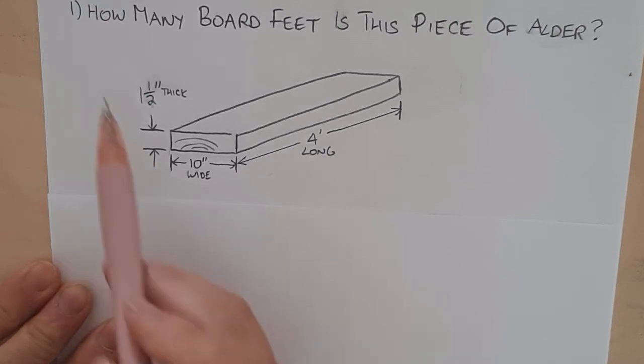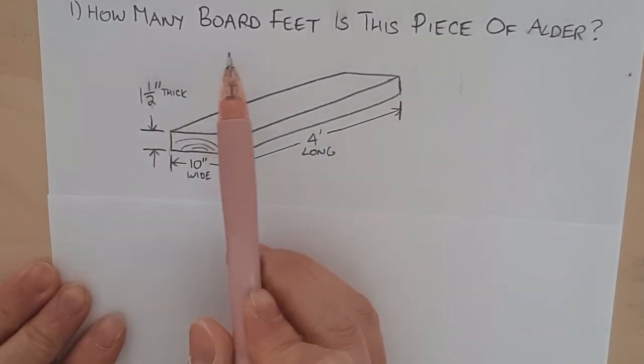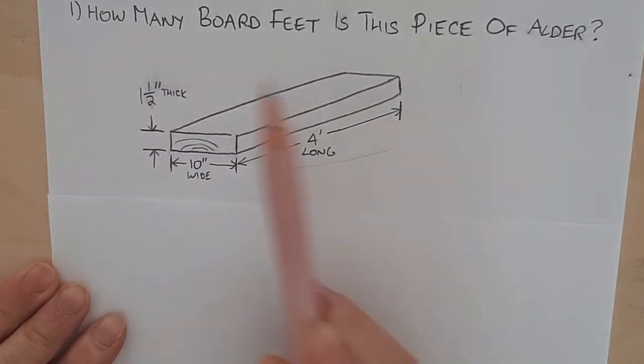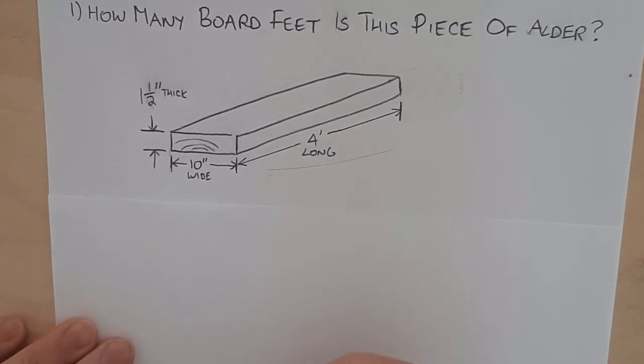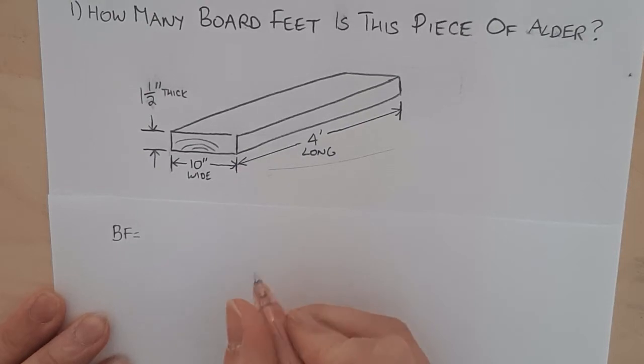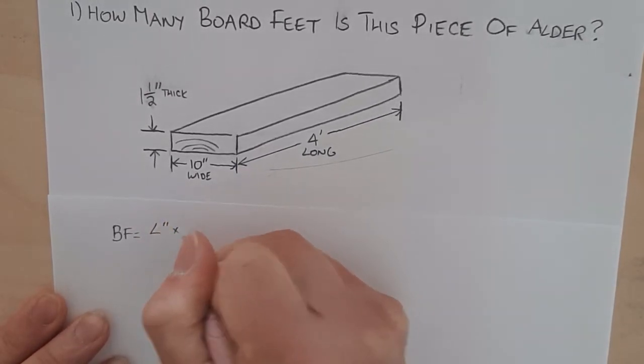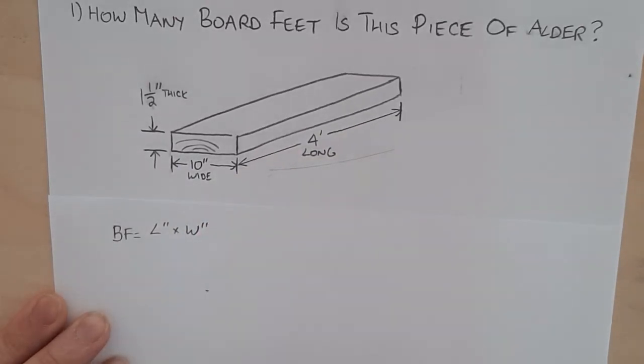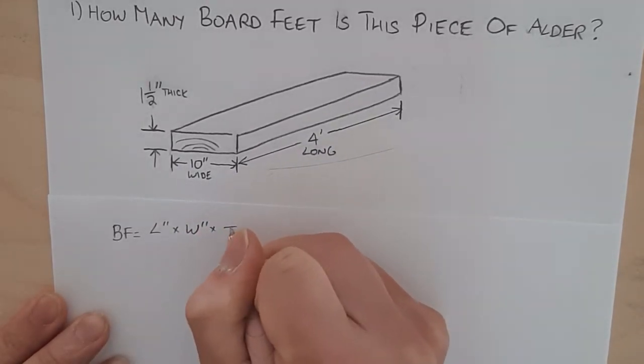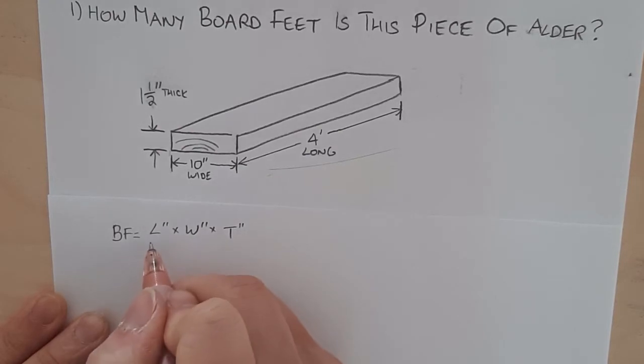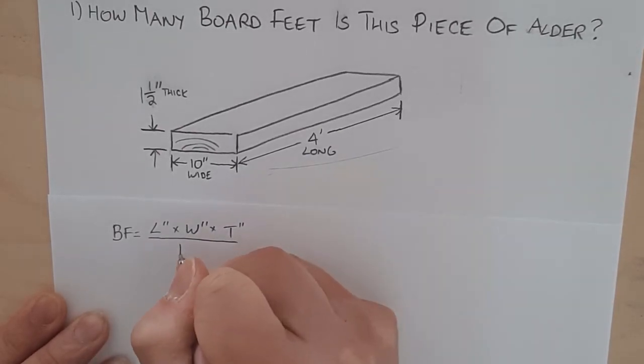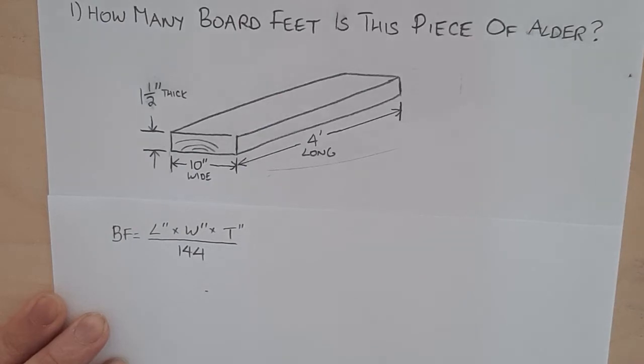So to begin, here is our first problem. How many board feet is this piece of alder? And so I've got this piece of wood right down here. So I'm just going to start by writing the formula down. So the formula for board feet is length in inches times width in inches times thickness in inches. And you divide it by 144.